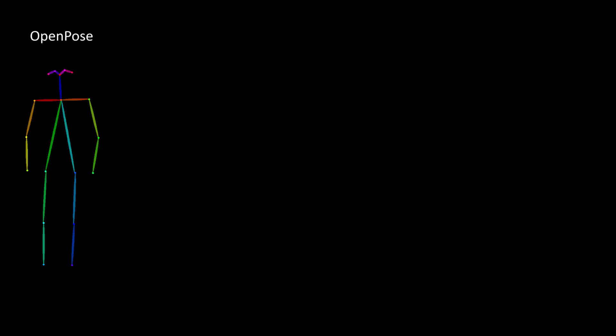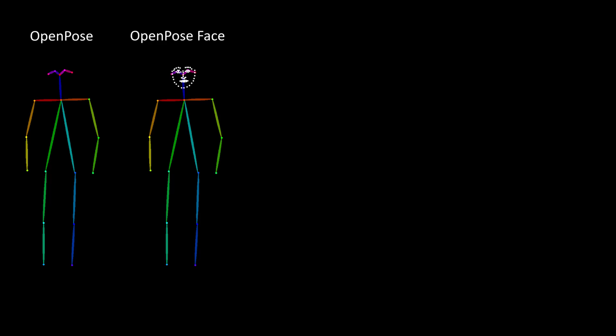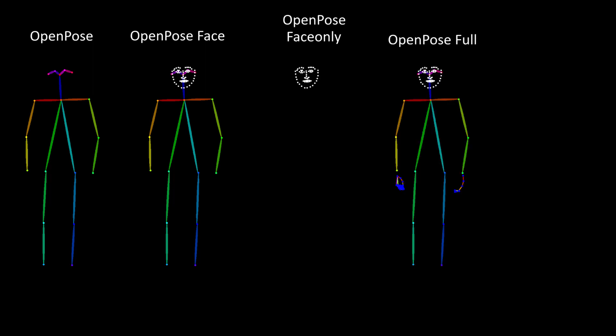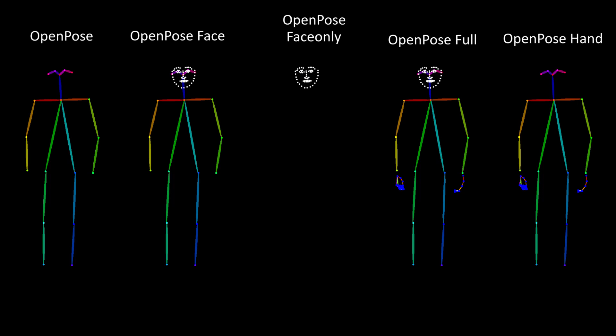The regular OpenPose preprocessor is the same as OpenPose in ControlNet 1.0 and will only detect the basic OpenPose skeleton. The OpenPose face preprocessor detects both the body skeleton and the face. The aptly named OpenPose face-only preprocessor does exactly what it says and only detects faces. The OpenPose full preprocessor looks for everything: the basic OpenPose skeleton, faces, and hands. Finally, the OpenPose hand preprocessor will detect the basic OpenPose skeleton and the hands.